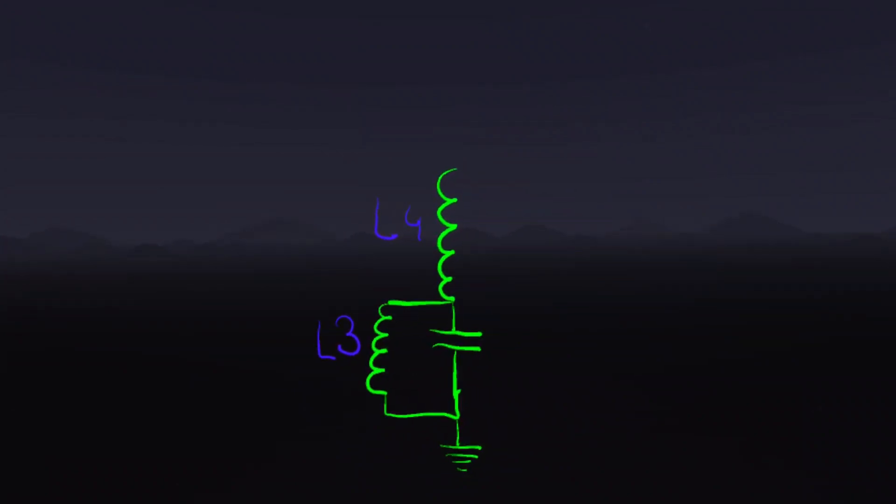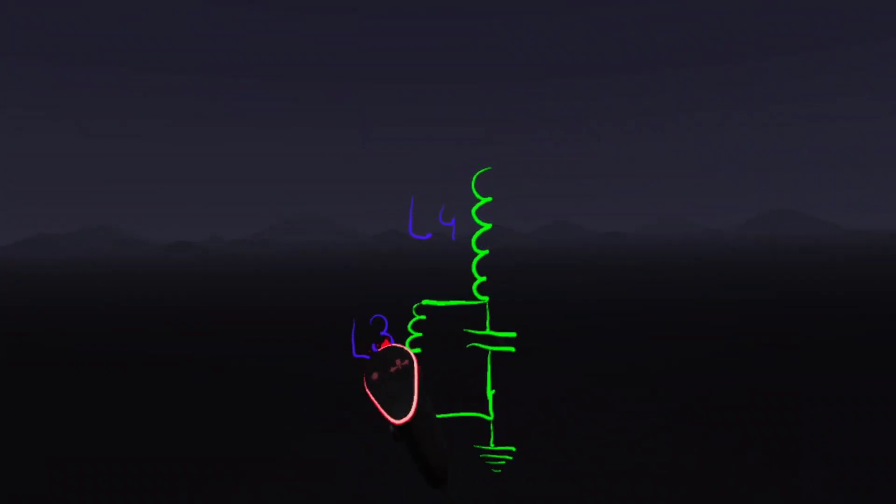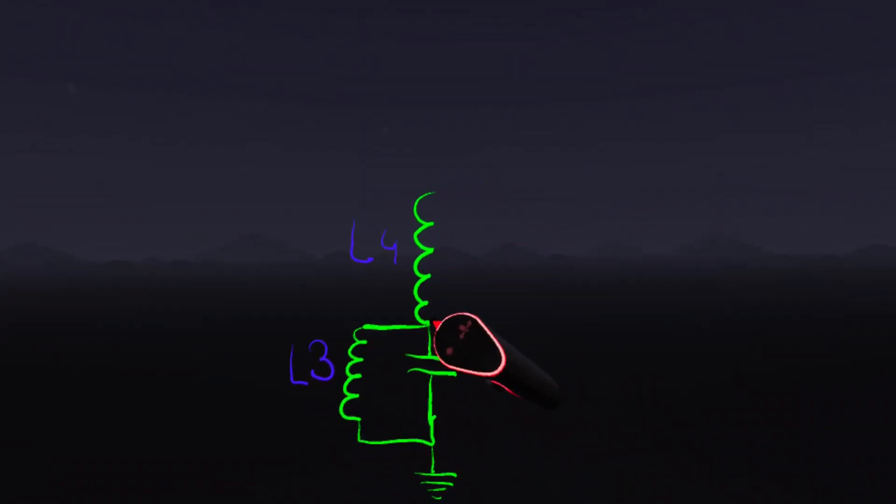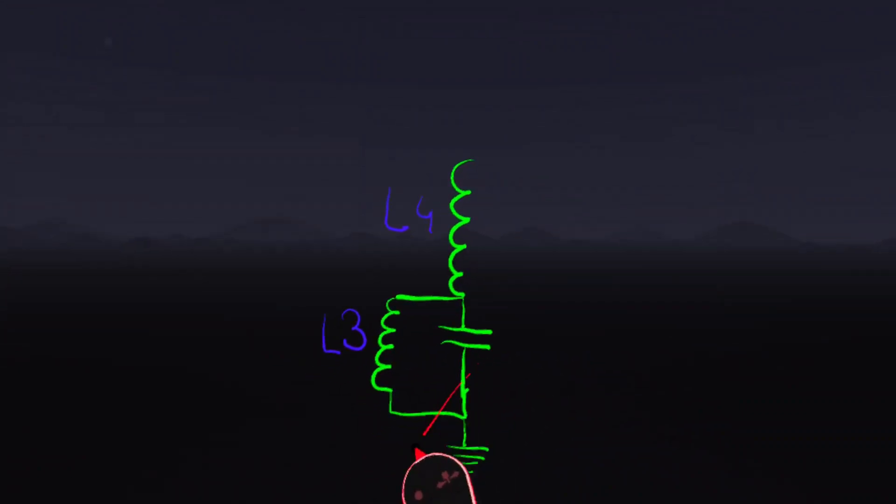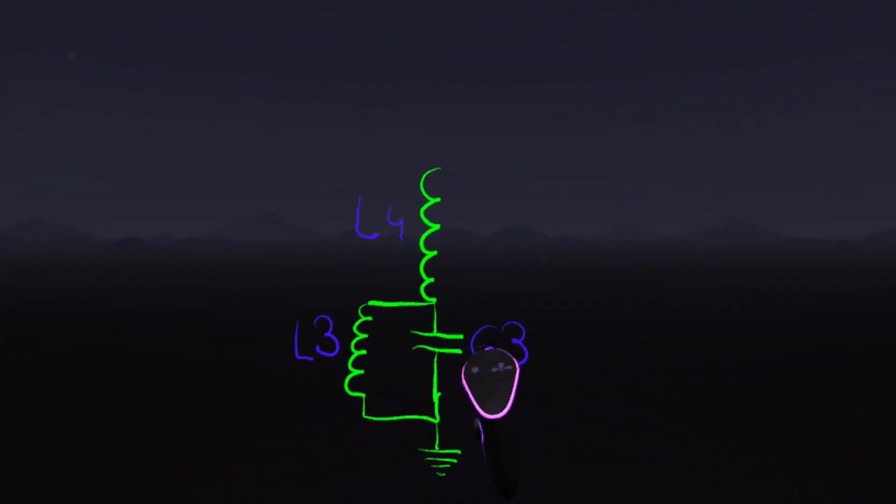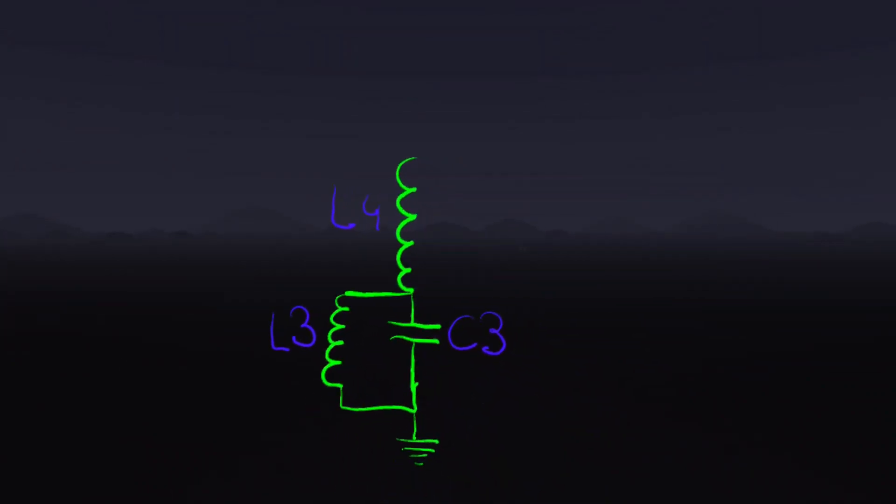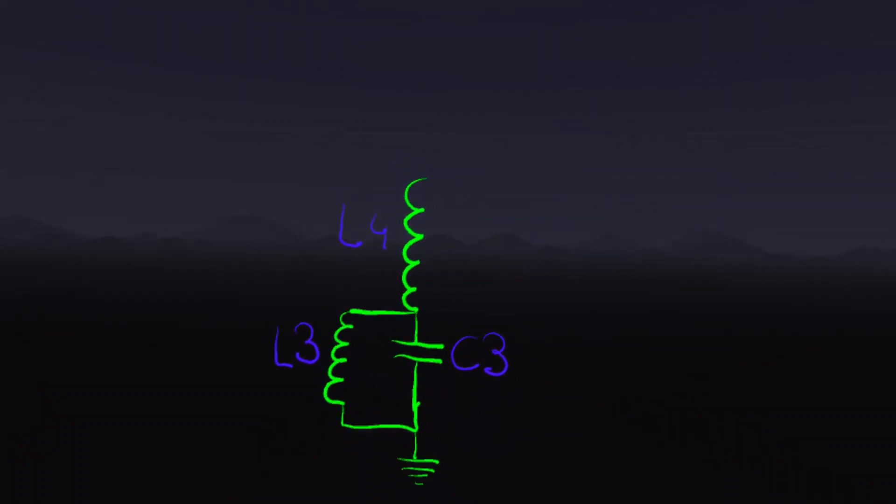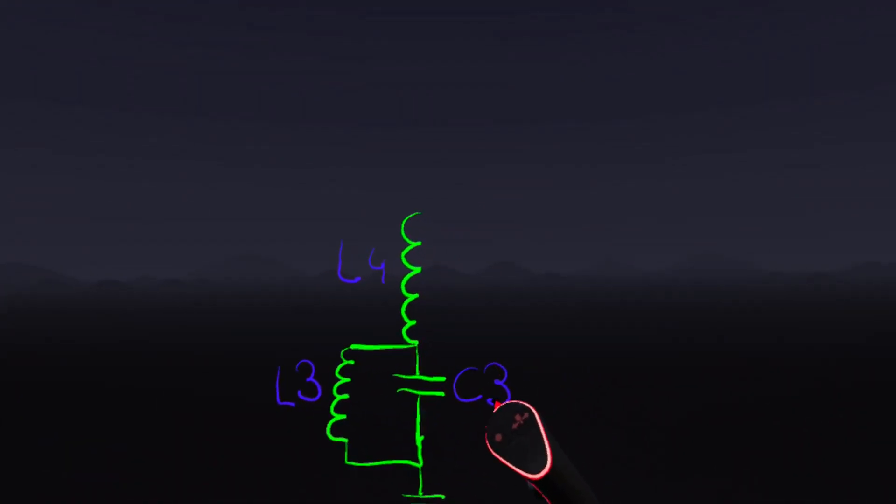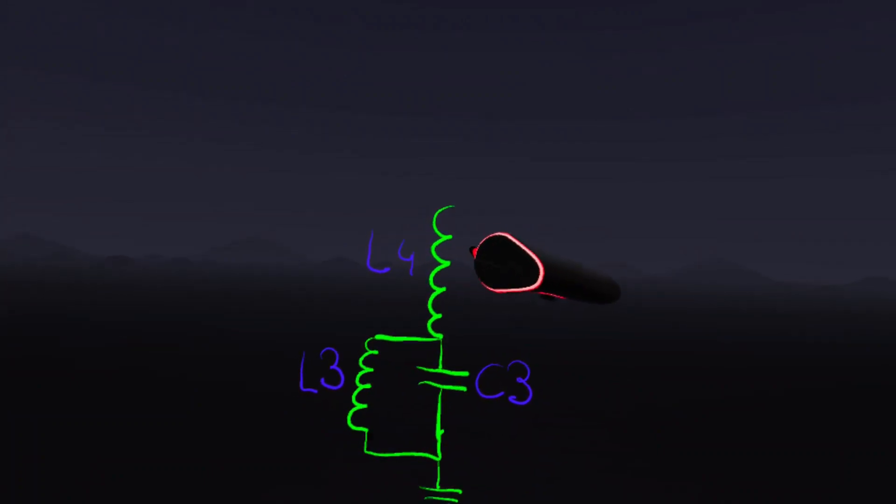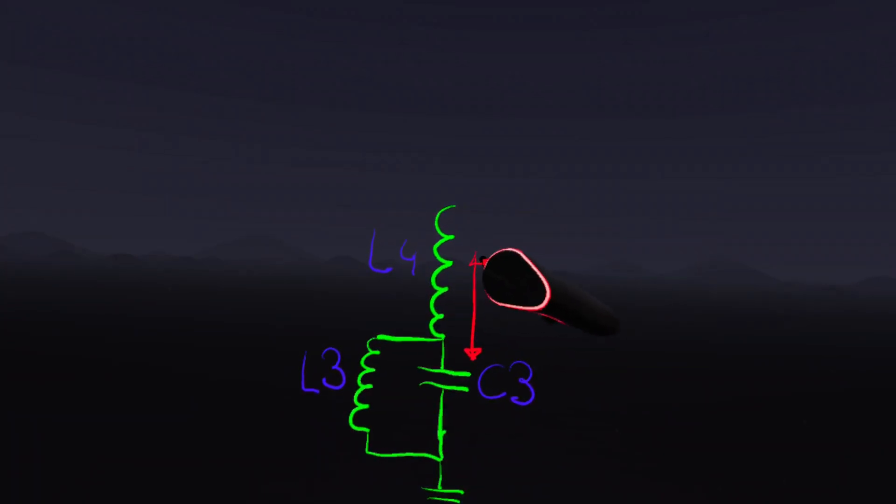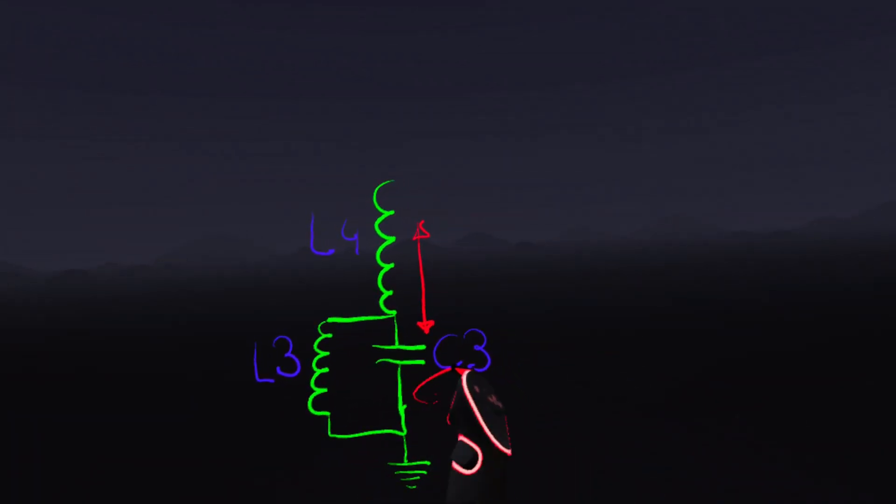This is the setup I've been experimenting with. L3 is my secondary coil and L4 is my extra coil. L3 has a tuning capacitor called C3, and this creates parallel resonance with L3. That's all working. What I want to create is series resonance with L4 and C3, so the energy exchanges between L4 and the C3 capacitor.